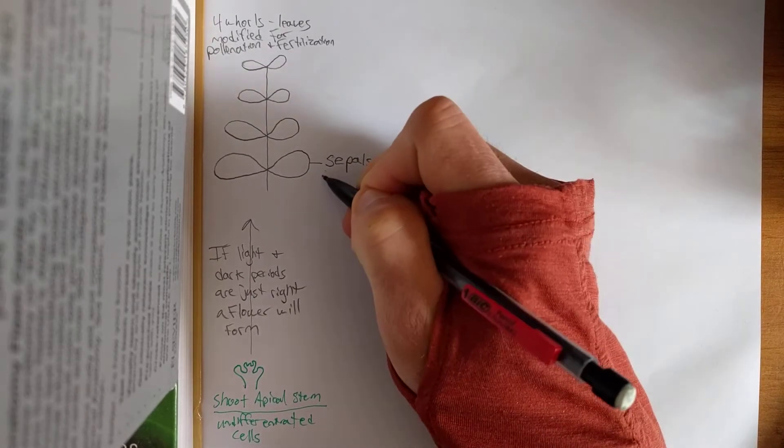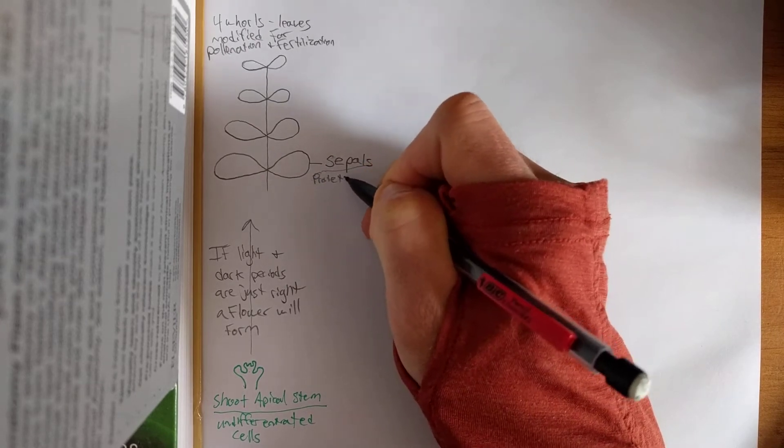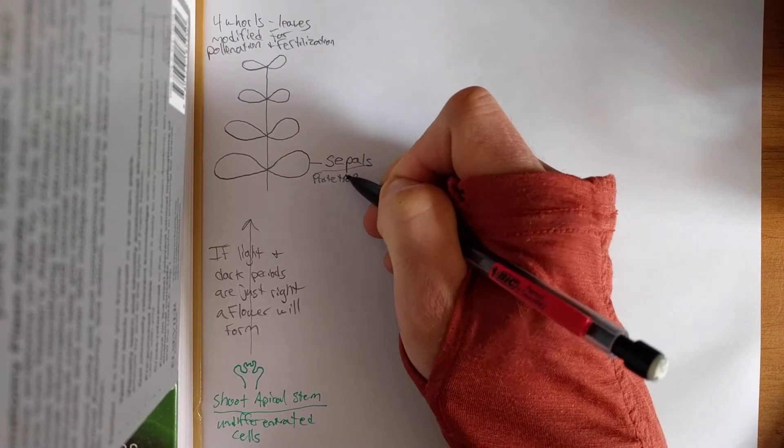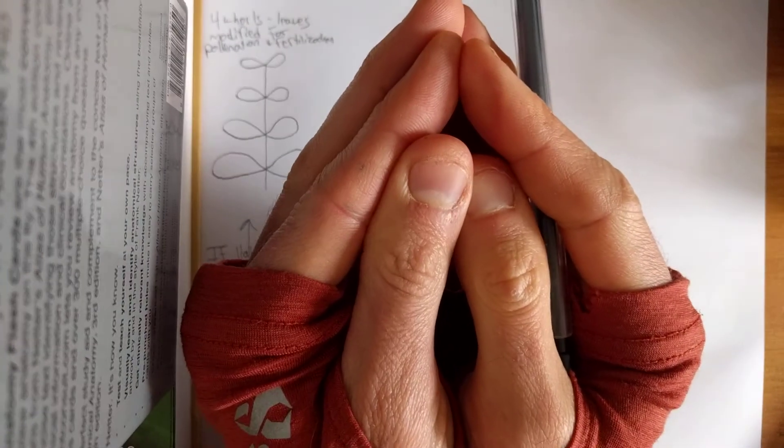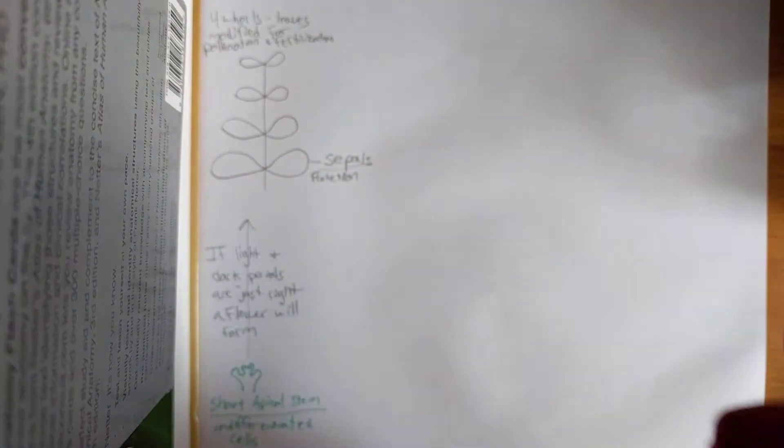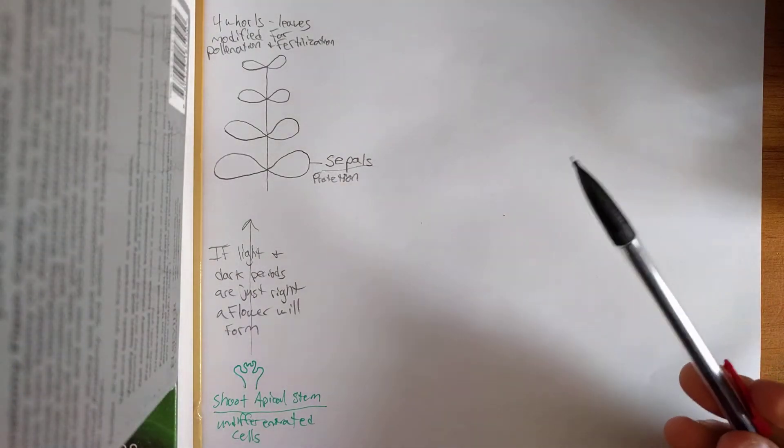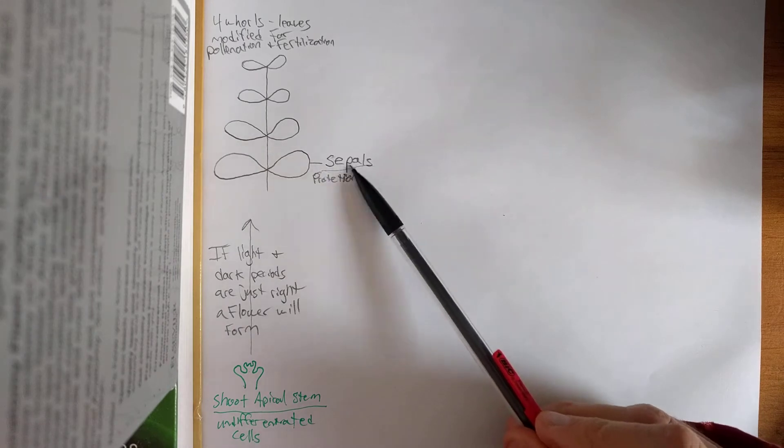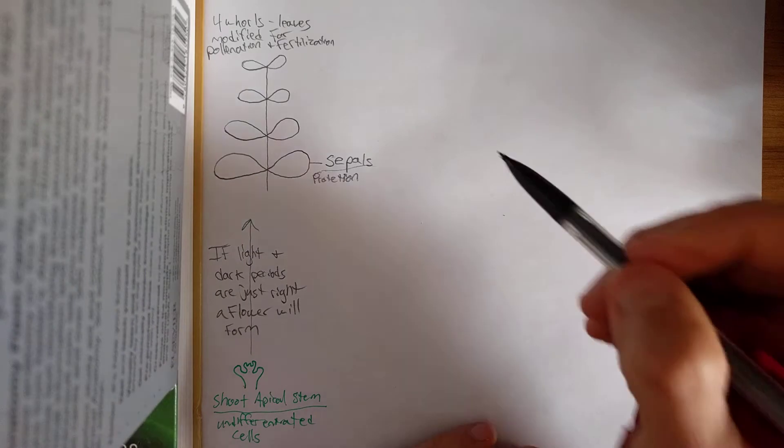Your bottom whorls are called sepals. These really are for protection. They are often green. They're still photosynthetic. And they are the bud of the newly developing flower. They're the green where you're like, okay, the flower hasn't opened yet. All I see are these green coverings. Those are your sepals. They lose their function once the flowers open. Their job's done.